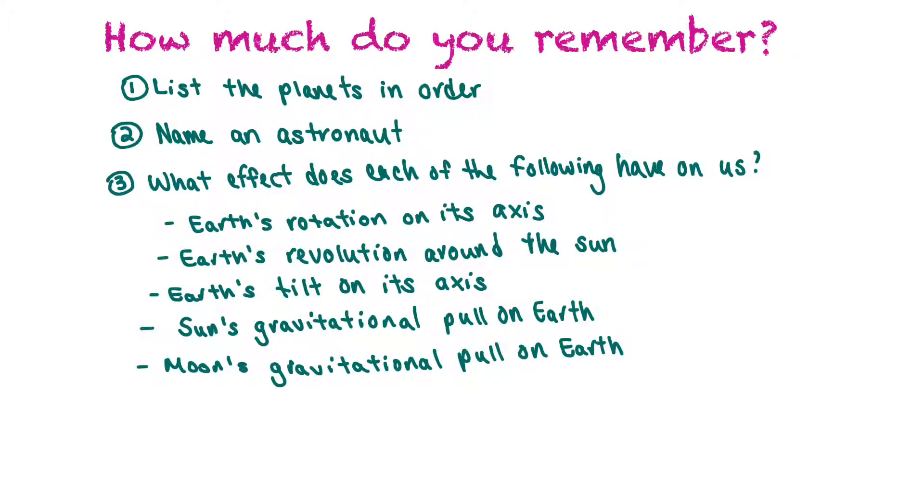Secondly, name an astronaut, any astronaut. Third, answer for each of these: what effect does each of the following have on Earth or on us? First, Earth's rotation on its axis. Second, Earth's revolution around the Sun. Third, Earth's tilt on its axis. Fourth, Sun's gravitational pull on Earth. And finally, Moon's gravitational pull on Earth. Before you go on, I would like you to press pause and answer these questions.